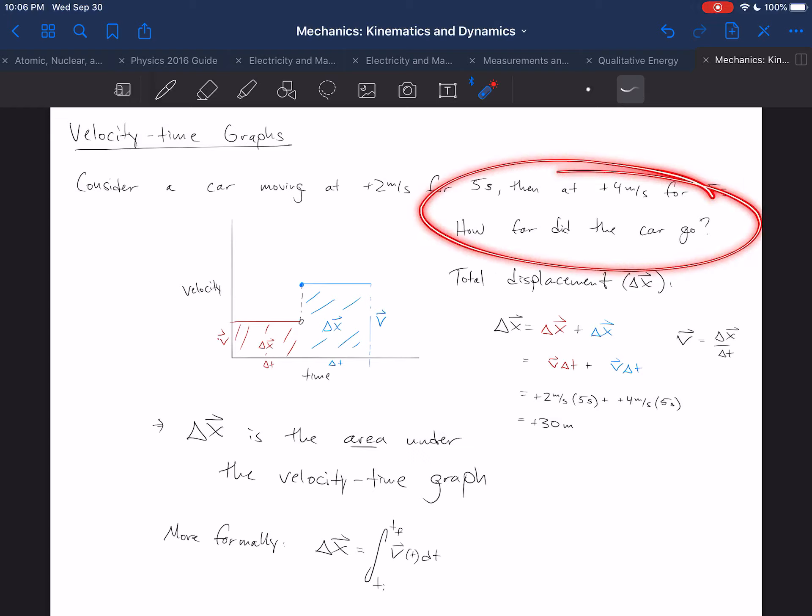How far did the car go? Well, to find that answer, notice that you're going to find the total displacement for the first interval, and then the total displacement for the second interval. You do that by taking the velocity and multiplying by the time interval for both intervals.